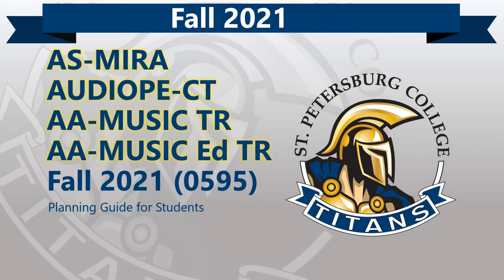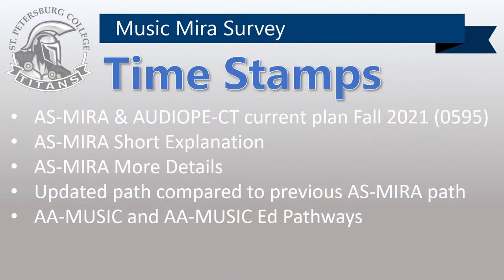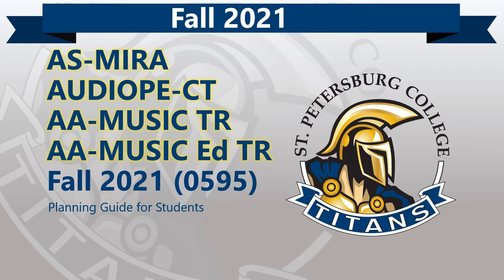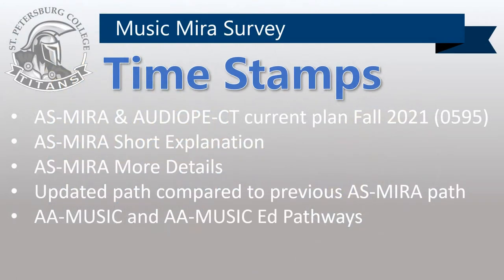This video is intended to help students plan their academic course path for those pursuing the MIRA AS degree, the Audio Production Engineering Certificate, or the AA Music and AA Music Ed Transfer degrees. You may skip ahead to topics using the timestamps in the description of the video. We will start with the overview of the Music Industry Recording Arts AS degree and the Audio Production and Engineering Certificate. Students pursuing the Music AA Transfer and Music Ed AA Transfer degrees can skip ahead to their pathway discussion at the timestamp.